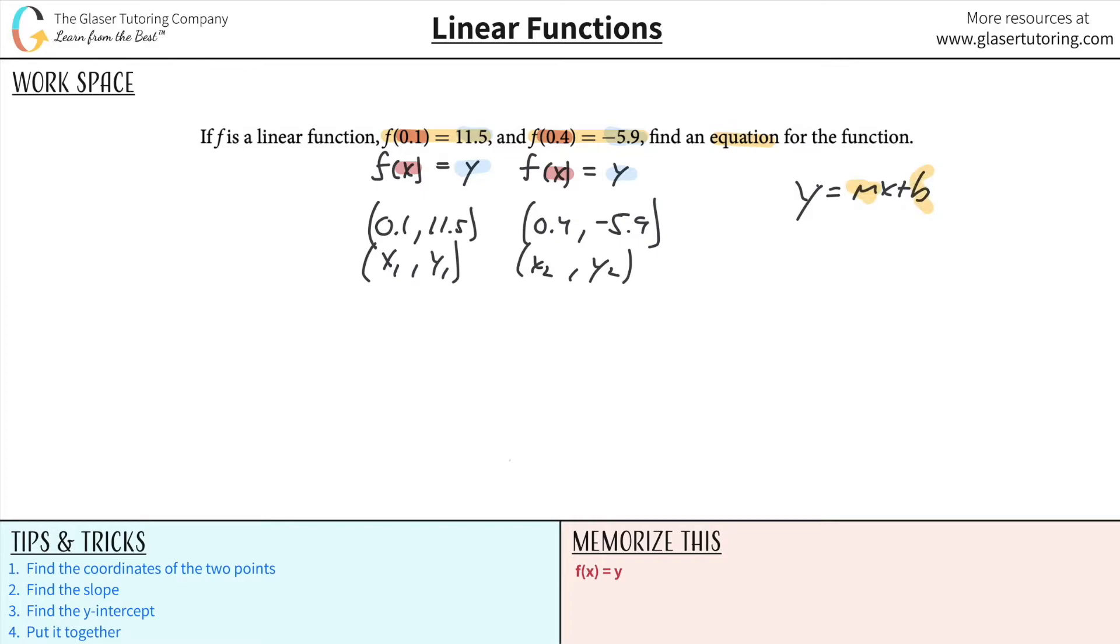Now, you might already say, I know, I know, I have two points, I could find the slope by using the slope formula. And that would be 100% correct. All right, so let's do that first. So let's take this, I'm just going to move it over here. Let's take this and plug it into our slope formula of y2 minus y1 all divided by x2 minus x1.